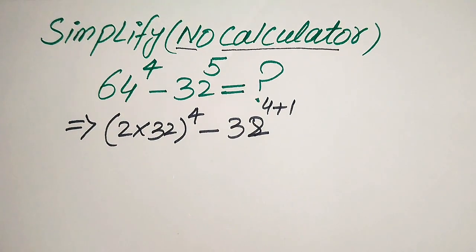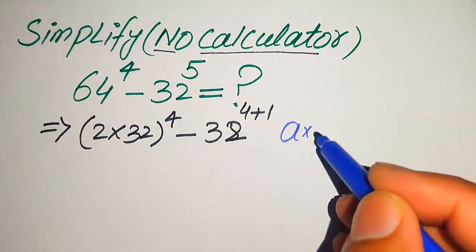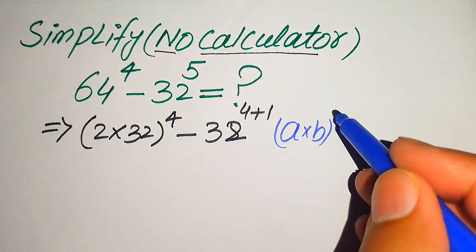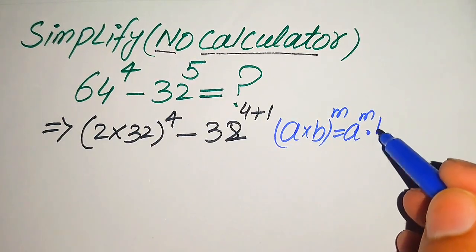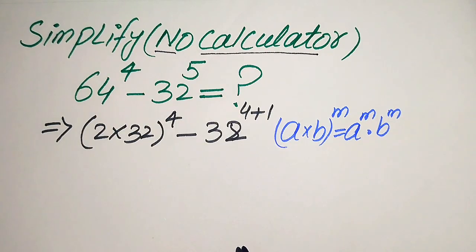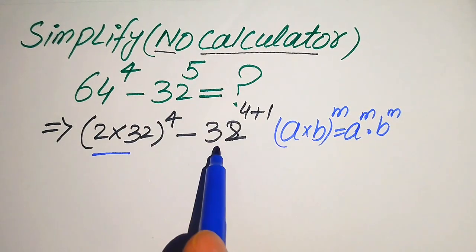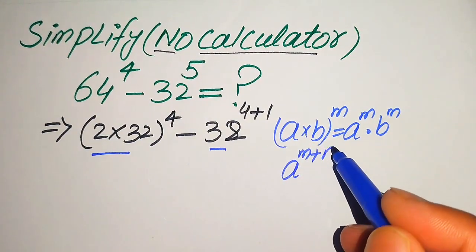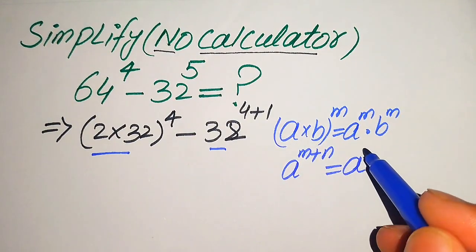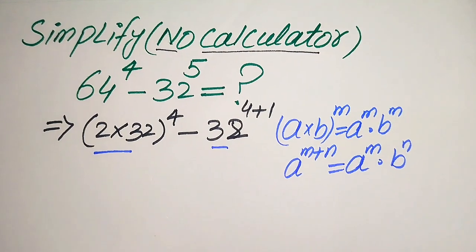Now in the next step we need to use the nice exponent laws. You know that if we have a multiplied by b and its whole power is m, we write it as a to the power of m multiplied by b to the power of m. And if we have a to the power of m plus n, we write it as a to the power of m multiplied by a to the power of n.